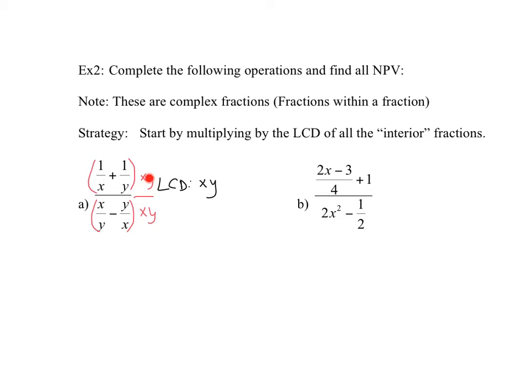So when you multiply xy times 1 over x, let's just write it out just to show you what it looks like. So you have xy times 1 over x and you have xy times 1 over y. So this is your numerator now. You have xy times the first fraction and xy times the second.